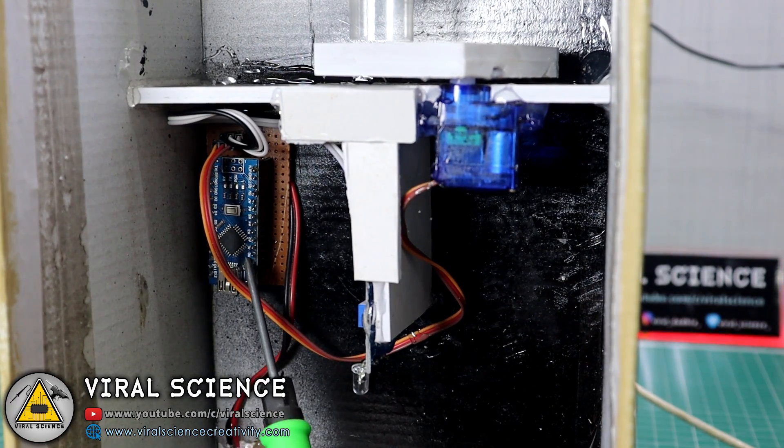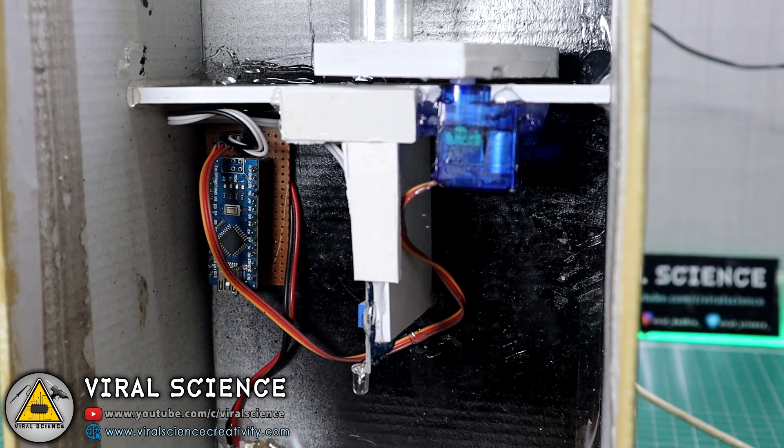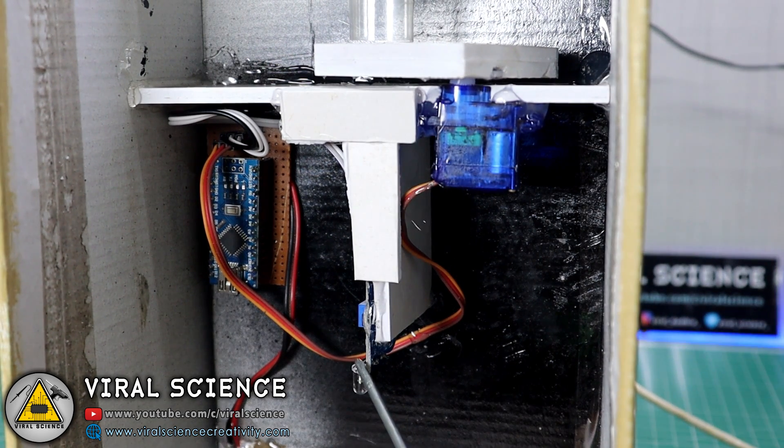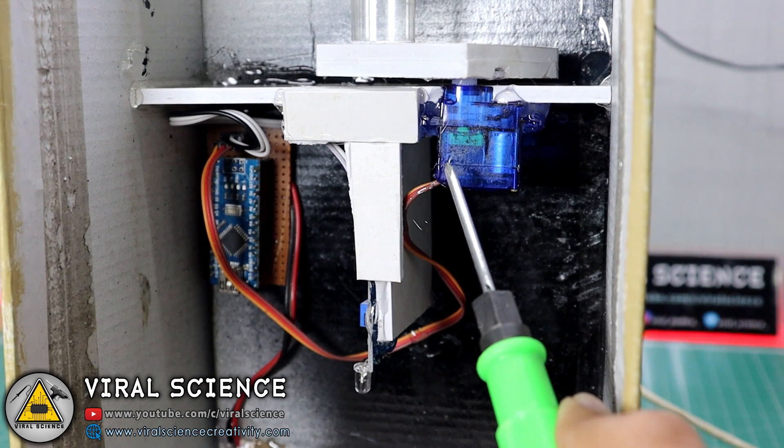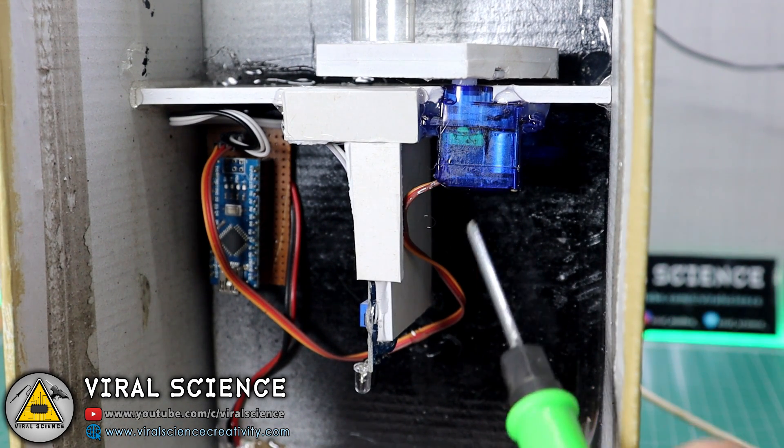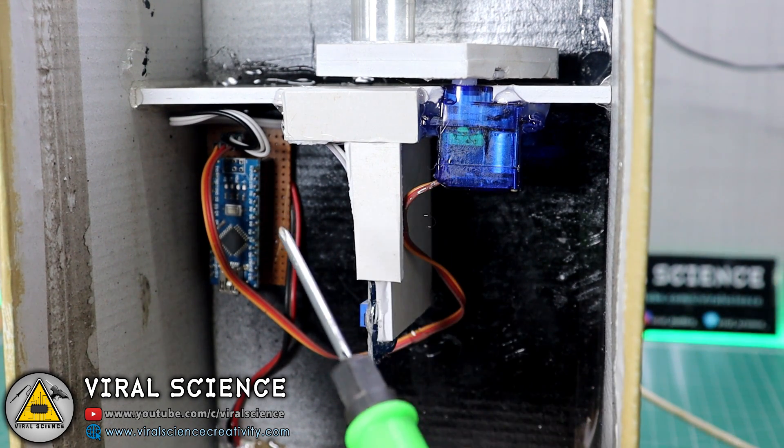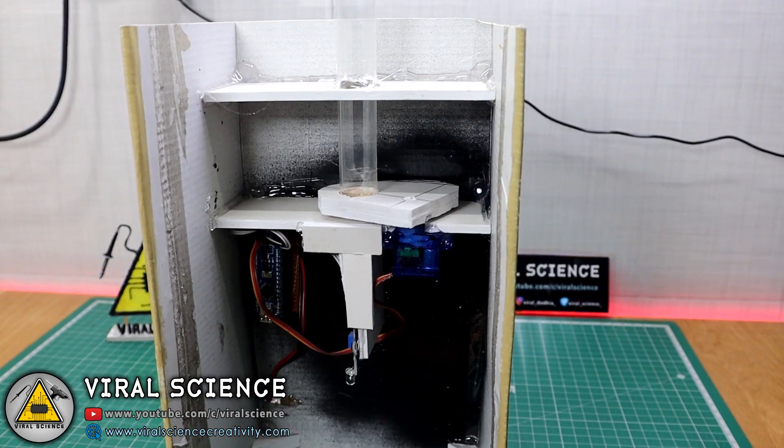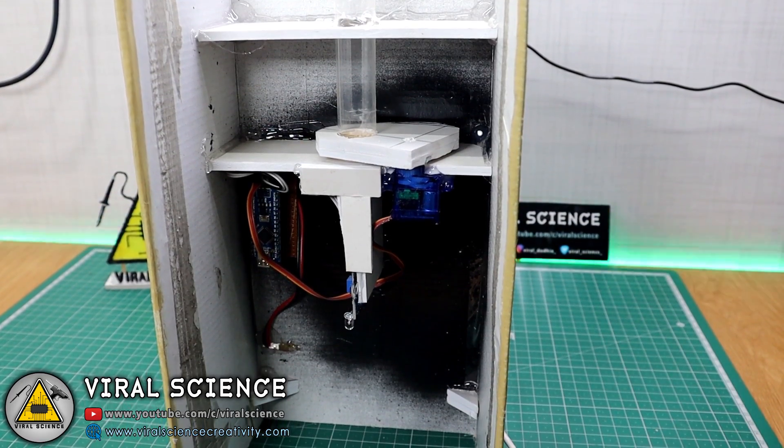So on the left, I have connected the Arduino and the PCB board. On the bottom, there is IR sensor which will detect our hand. And on the right side, I have connected our servo motor which will drop the pill one by one.